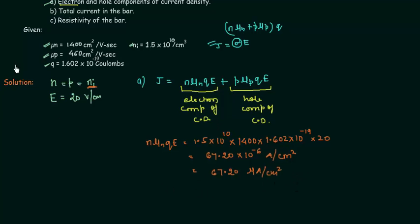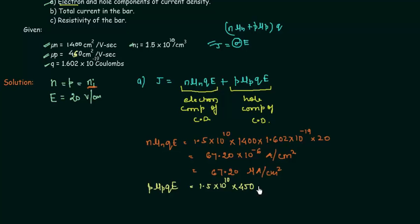Now we calculate the hole component, p·mu_p·q·E. The value for p is 1.5 x 10 to the power 10, since we have an intrinsic semiconductor. The mobility of holes is smaller than that of electrons and is 450 cm squared per volt-second. q is 1.602 x 10 to the power minus 19, and E is 20. Solving this gives 21.6 micro ampere per centimeter square as the hole component of current density.